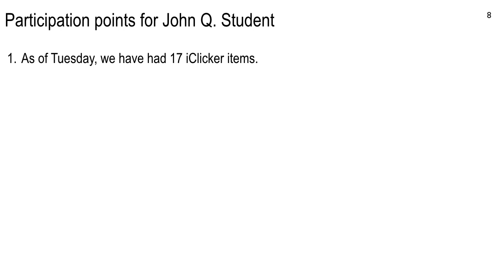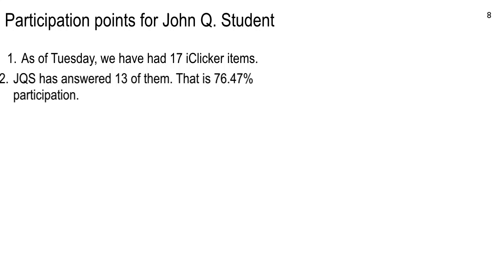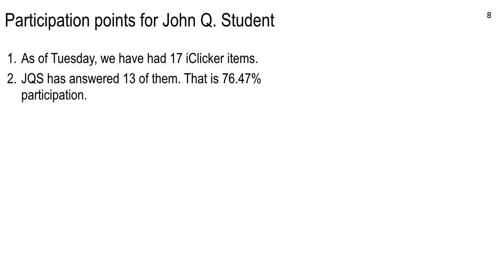Right now we've had 17 clicker items. If you've answered 15 or more, you're above 85% and you can pencil yourself in as 25 out of 25. If you're 14 or fewer, you're a little below 85% participation and you've got to calculate it. The student in our example has 13 answers as of Tuesday — that's 76.47% participation, a little below 85%.